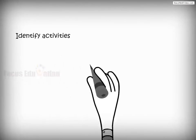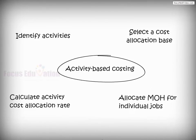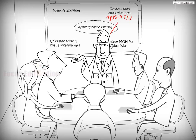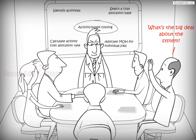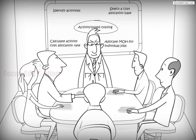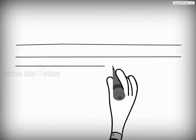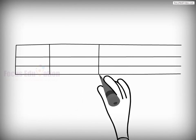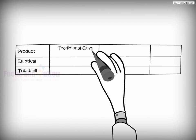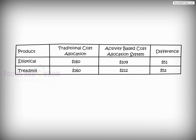This completes the four-step application to allocate indirect costs using activity-based costing. A pertinent question arises: whether the company has really benefited from the improved cost information system. Given that the company followed traditional cost allocating systems before, comparison reveals that the ABC model helped reduce cost distortion. With each allocation system rendering a different amount of manufacturing overhead, management noticed that the traditional system had been severely distorting costs — each elliptical had been over-costed by $51 and each treadmill had been under-costed by $52.